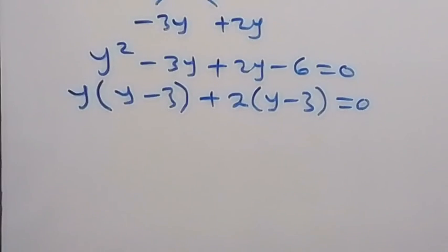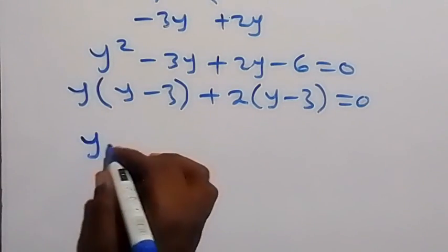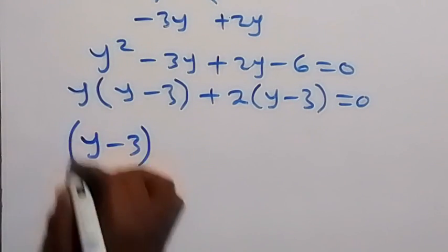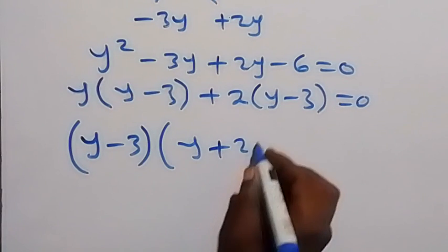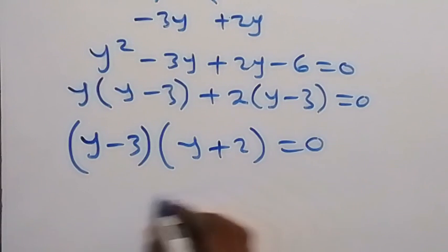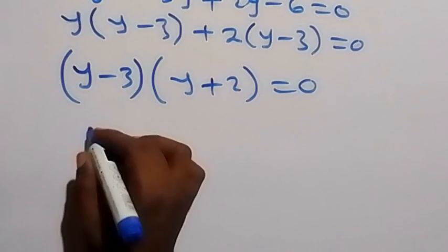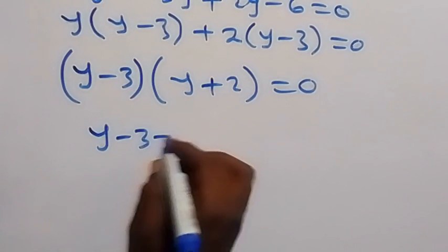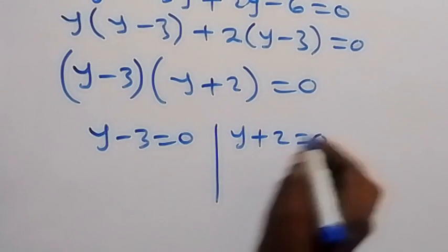Then from here we have y minus 3 common. Let's take it out: y minus 3, then what is left here is y, and left here is 2, then equals to 0. So we have two cases here: either y minus 3 equals to 0, or y plus 2 equals to 0.